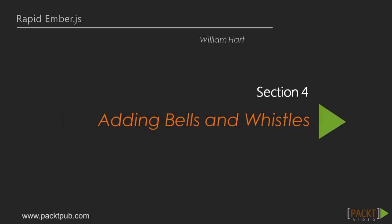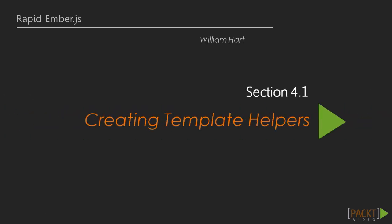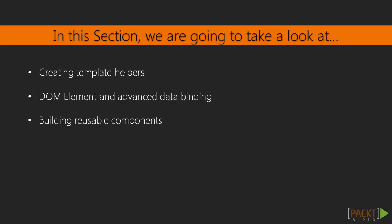In the previous section we got our basic application working, and at the very end we saw a version of the application with some basic CSS styles. In this section we are going to build on the styled version of the application by adding some enhanced template functionality. We will also build some more complex data bindings and finally bundle a few items together into a reusable component.